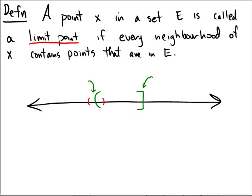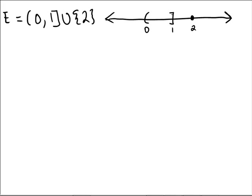So let's look at a curious example here. Consider the set open interval from 0, closed at 1, unioned with the singleton {2}. So, remember to be a limit point means that every neighborhood of x has to contain points that are inside of the set E.